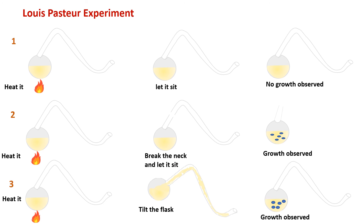In the third experiment, after heating the flask he tilted it, and growth was seen after a few days — the tilted flask gave contaminants access to spoil the broth. These experiments proved that there was no spontaneous generation, since the boiled broth, if never exposed to air, remained sterile.